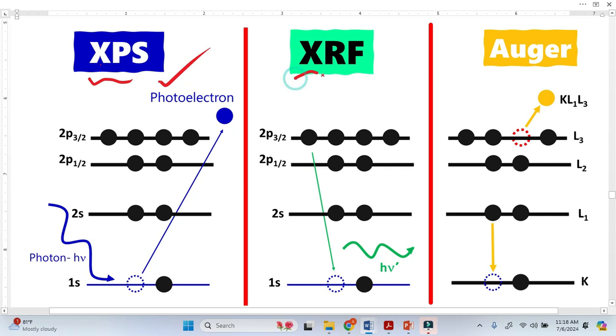The second one is X-ray fluorescence. The third one is called Auger phenomena, Auger effect, or Auger electrons. So let's differentiate between all these three.